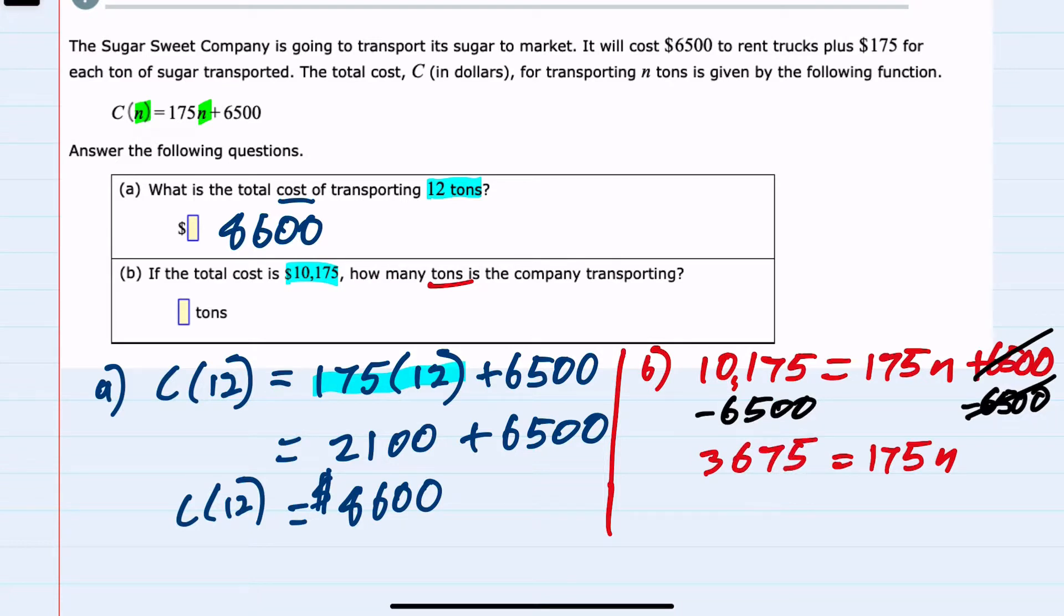And then continuing to solve for n, we could divide by $175 on both sides to cancel that coefficient, leaving me with n on the right hand side by itself. And then doing the division on the left hand side gives us 21. So we found that 21 tons would require a cost of $10,175.